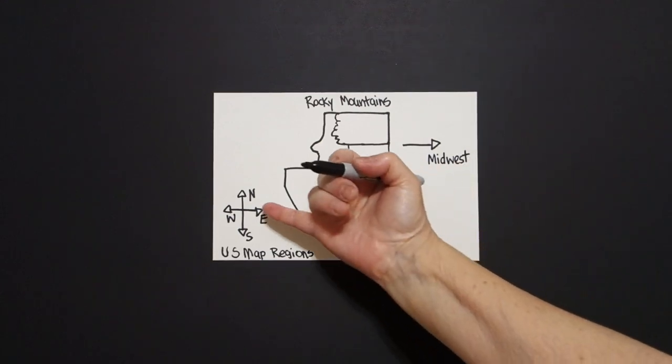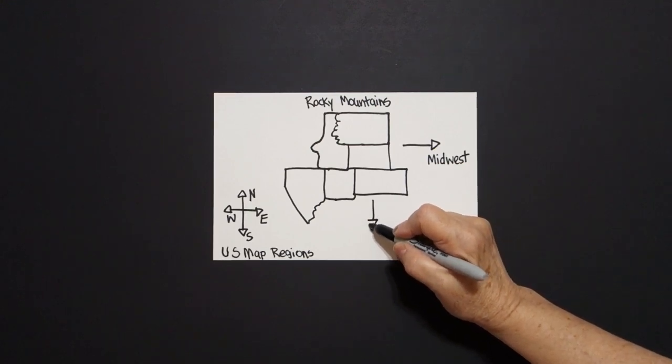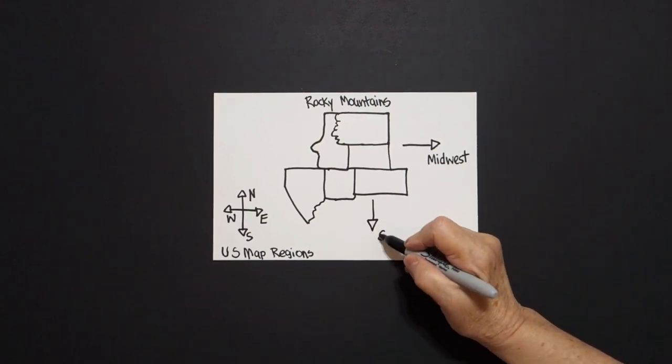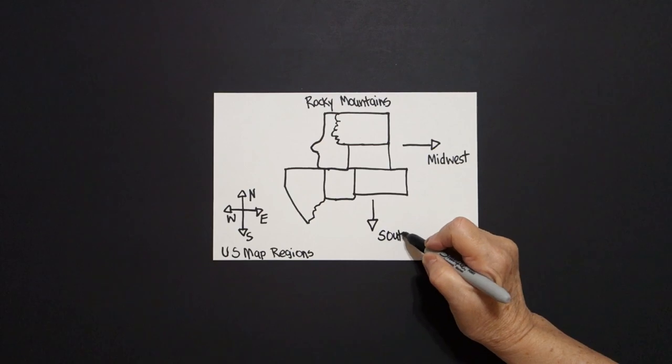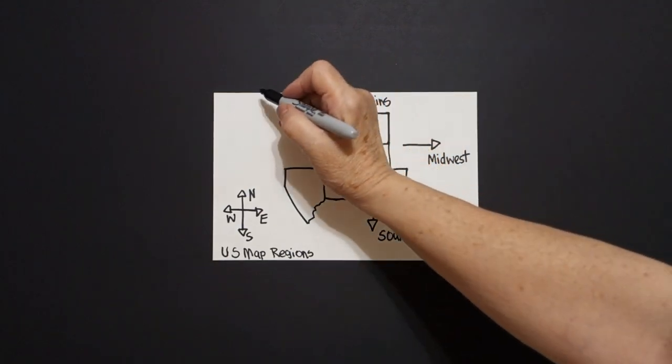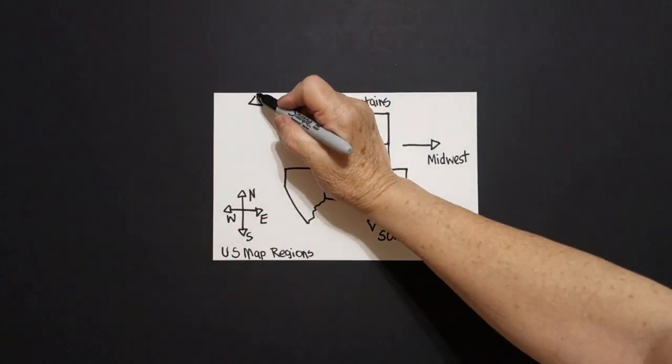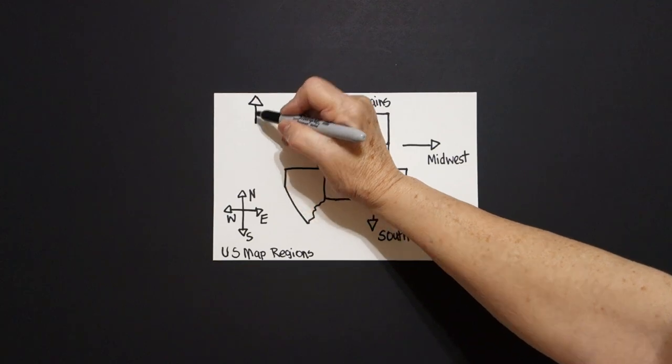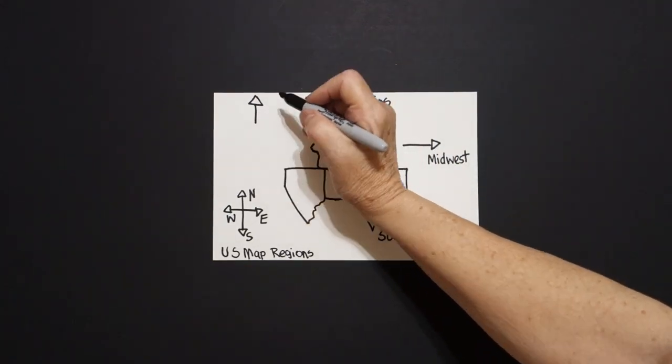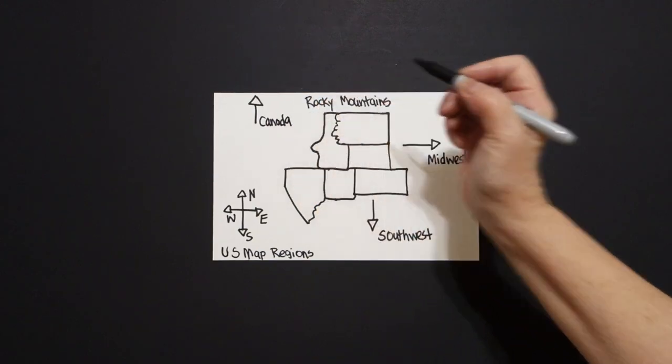If we go south, directly straight line, triangle, we're going to go to the southwest. If we go north, triangle, straight line, we're going to get into Canada, a whole other country.